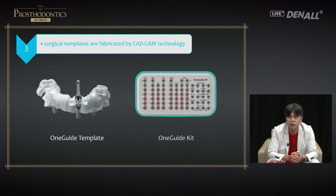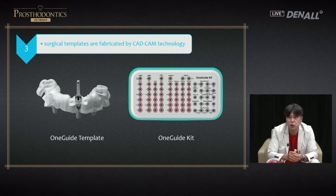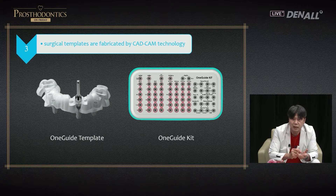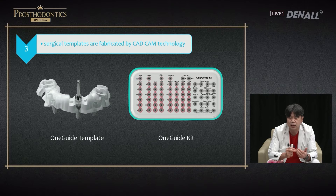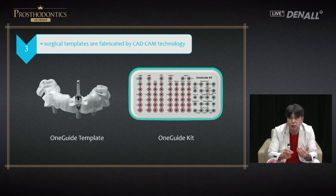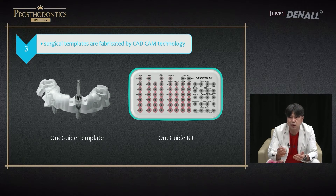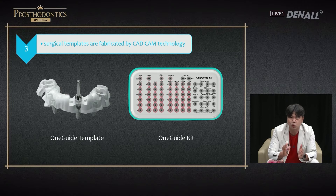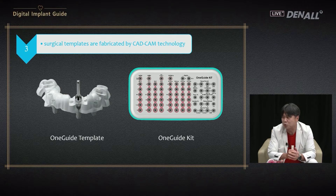You can obtain the guide through one of those three ways. You also need the guide kit for surgery — to use the guide, you need to have matching instruments for surgery. If you ordered a OneGuide template, you need to have the matching guide kit. Another company's or third-party products will not work. If both are ready, you are ready to do the guided surgery.